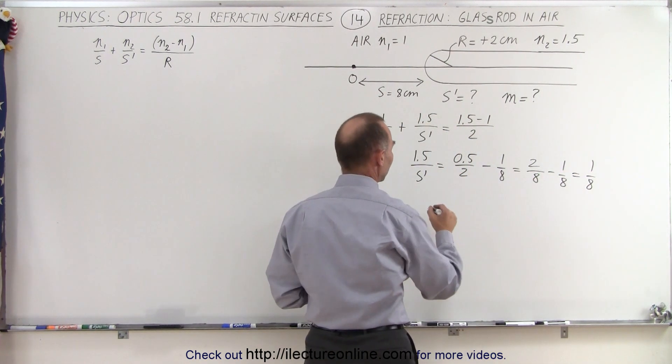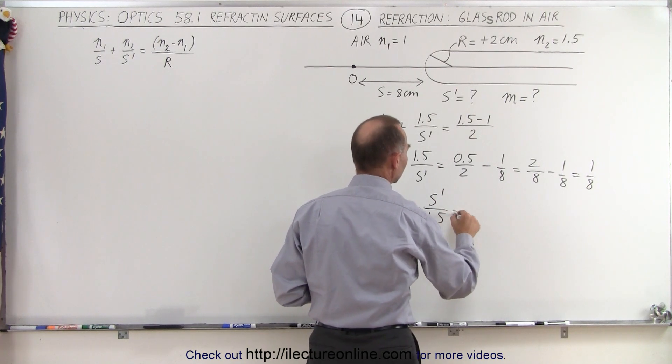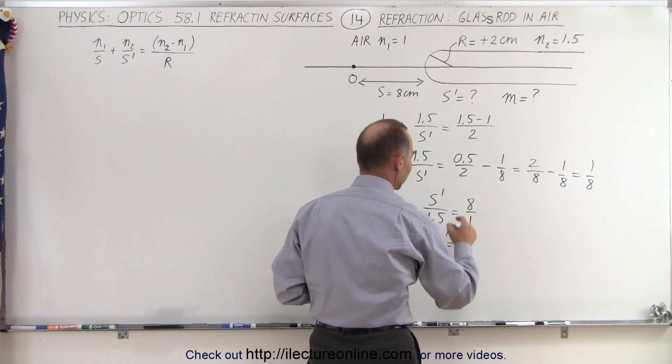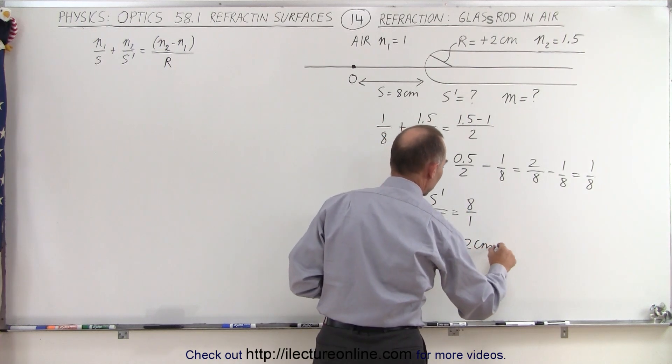Taking the inverse of that, s prime over 1.5 is equal to 8 over 1, or s prime is equal to 1.5 times 8, or 12 centimeters.